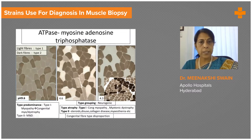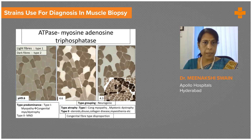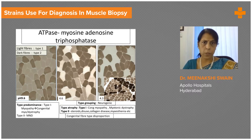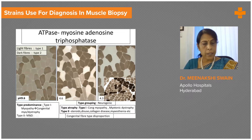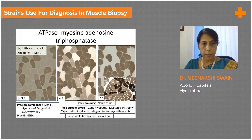Is this hair-splitting exercise of ATPase stains done at different pHs required? ATPase is the only stain done at three different pHs — 9.6, 4.6, and 4.3 — specifically to see the various fiber types. At pH 9.6, the pale fibers are type 1 and the dark fibers are type 2. The reverse happens in all other enzyme stains, where dark fibers are type 1 and pale fibers are type 2. A type 1 predominance — that is, a predominance of type 1 pale fibers at pH 9.6 — is usually an indicator of congenital myopathy in children or myotonic dystrophy. A type 2 predominance, that is a predominance of dark fibers, is a feature of motor neuron disease.